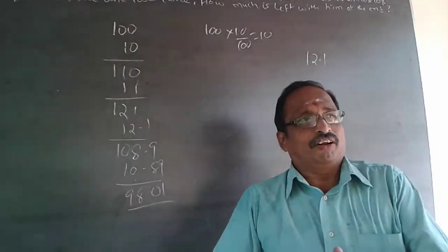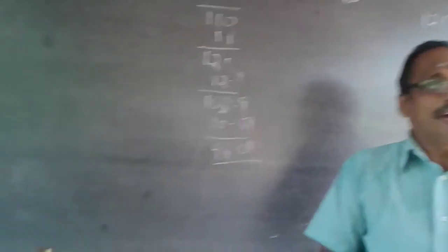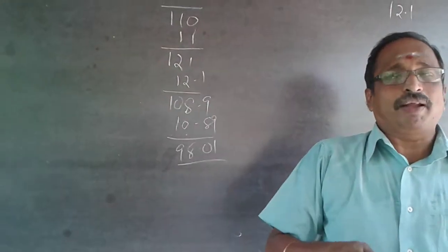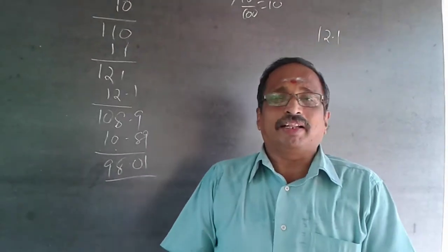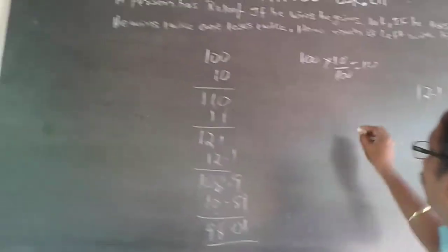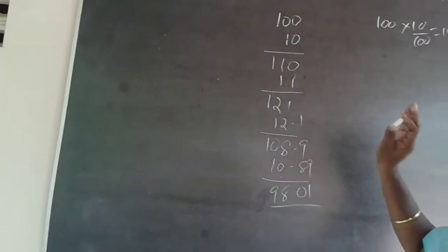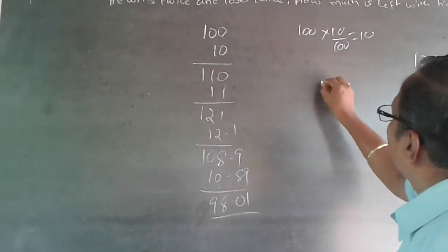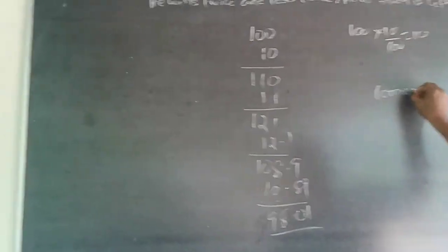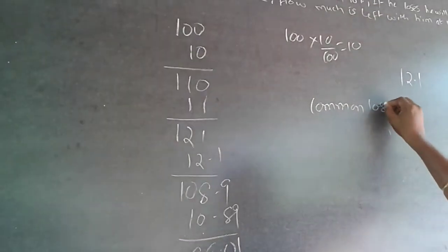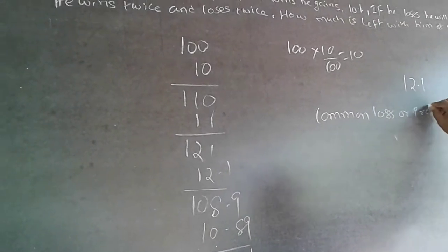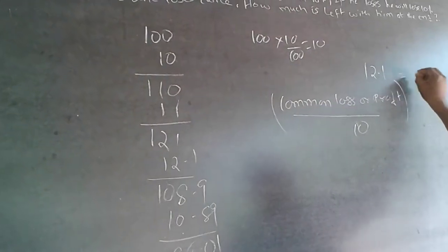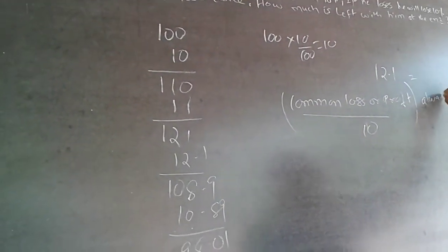I'm also talking about profit and loss here. See, there's a formula where the selling price is same, same profit and loss percentage. The formula is: common loss or profit divided by 10, the whole square, always loss in percentage. Whenever the selling price is same and profit loss percentage is same, the formula is common loss or profit divided by 10, the whole square, always loss in percentage.